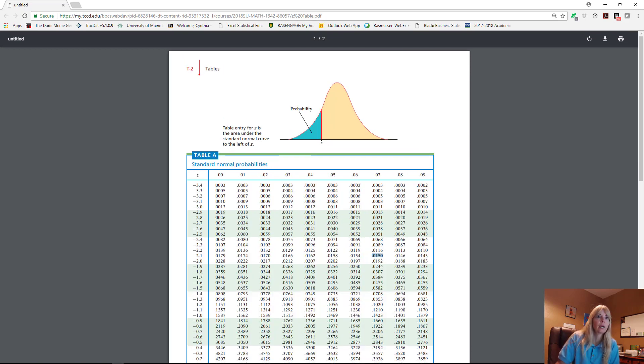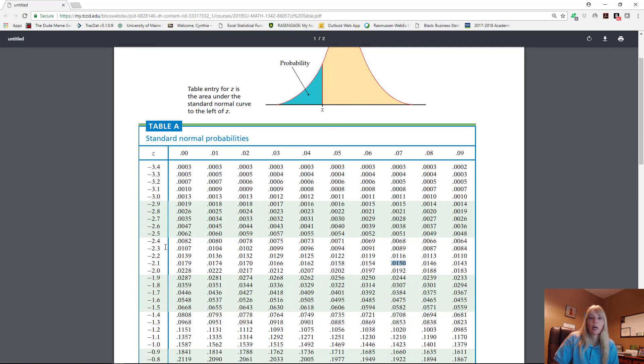How you do that? You find your table, and you look on the negative side. Why? Because my z-score is negative 2.1. And then I go straight across until I'm under .07. Why? Negative 2.1 plus .07 equals negative 2.17. And I get 0.0150.